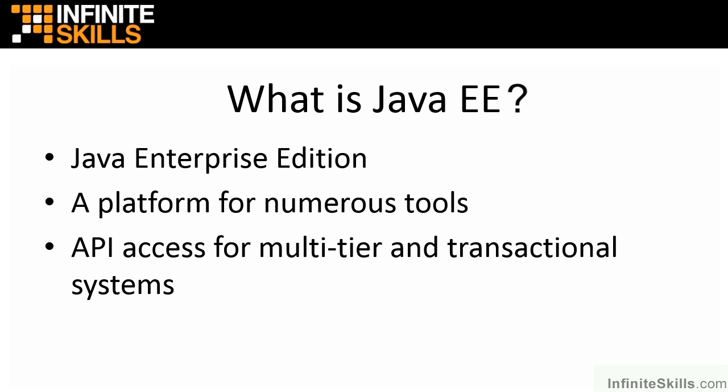So what is Java EE? Java EE is the Java Enterprise Edition. The SE is the Standard Edition, and the Enterprise Edition gives us the tools to do business-level applications. The EE provides numerous tools through API access — Application Programming Interface — and those tools allow us to work on different tiers of an application, so we can separate our applications into a business tier, a data tier, or a client tier.